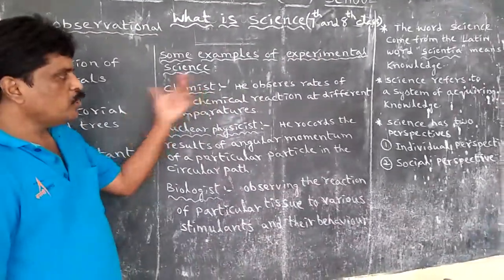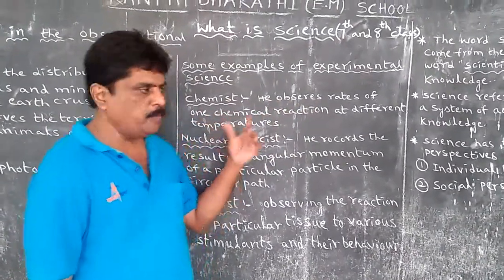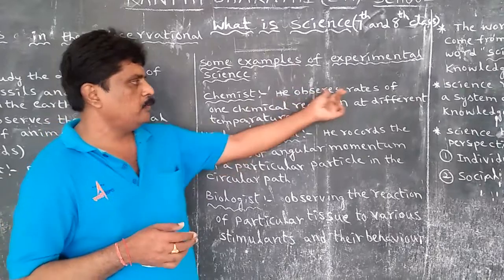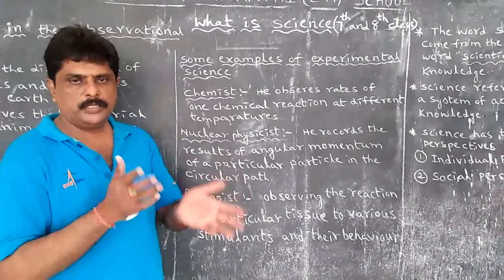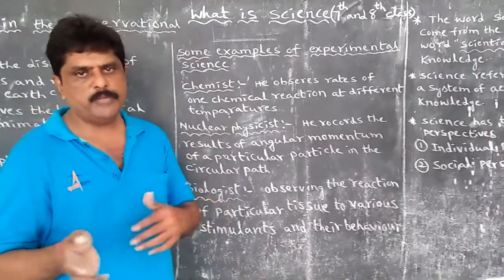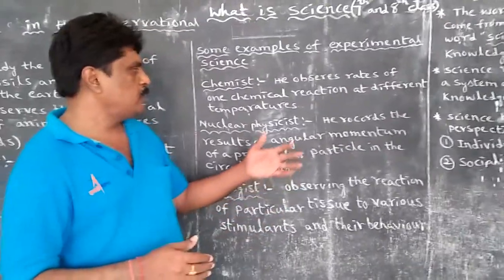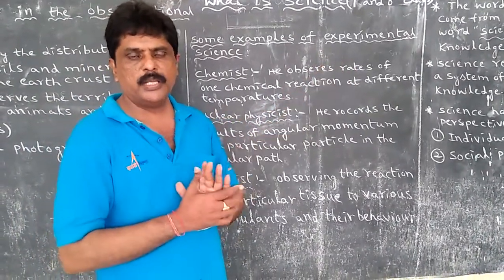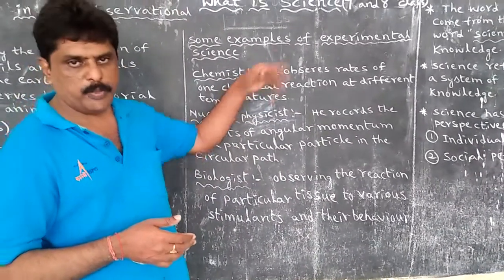The first example of experimental science is chemistry. A chemist observes the rate of chemical reaction at different temperatures. The rate means time and matter. For example, hydrogen plus oxygen gives water, and C plus O2 gives CO2. These chemical reactions are formed at different temperatures. This is the chemistry example for experimental science.